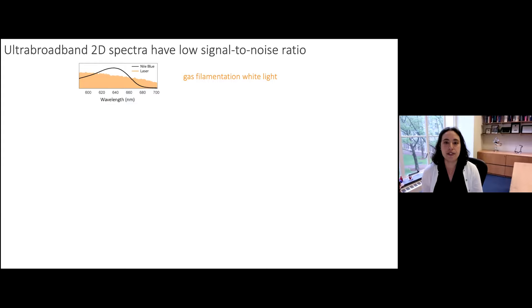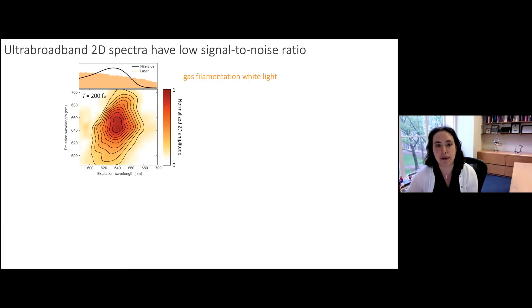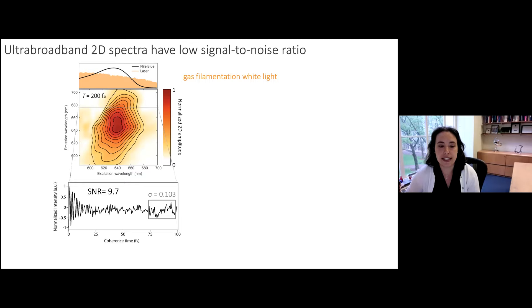For simplicity, we generate our white light in an argon tube, giving us an ultra-broadband setup. Taking a 2D spectrum on nile blue to characterize the setup, we assess signal-to-noise by comparing fluctuations at long coherence times to the signal amplitude at short times. What we find is a signal-to-noise ratio of around 10, which is not that great.